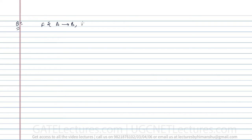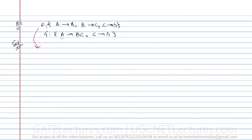Next example: assume F = {A→B, B→C, C→D} and G = {A→BC, C→D}. We need to identify whether F is equivalent to G or not. In G, A→BC can be broken down into A→B and A→C. A→C is not present in F directly, and B→C from F is not present in G. So let us check.